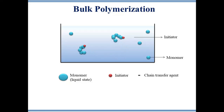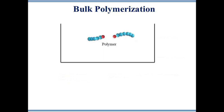To terminate the reaction, a chain transfer agent is added. Finally, two polymer chain radicals combine together and form a long neutral polymer chain. This reaction is purely exothermic and a wide range of molecular masses are produced.